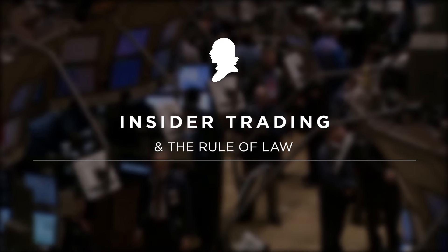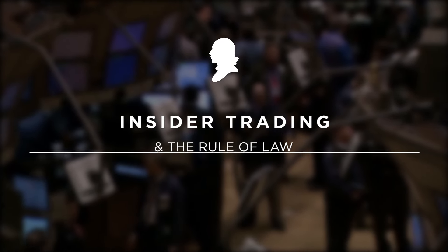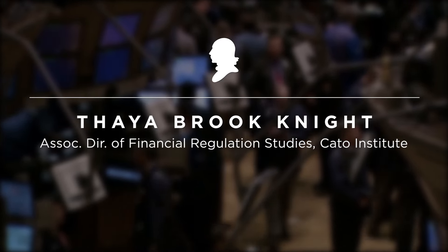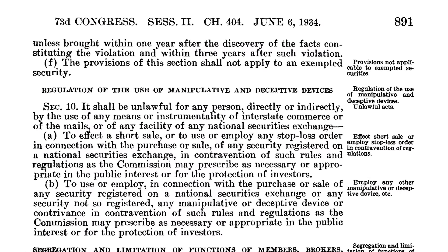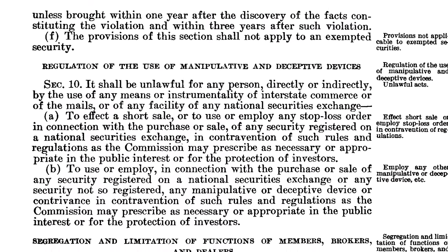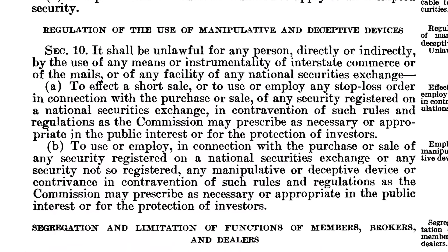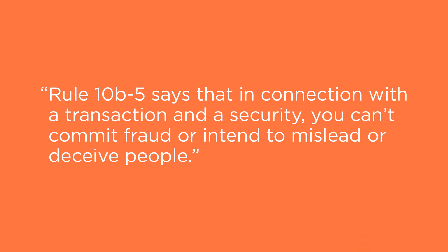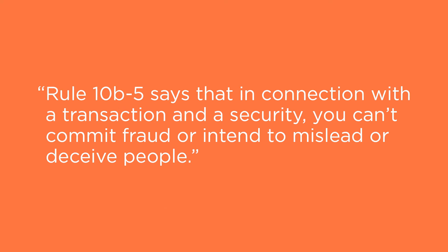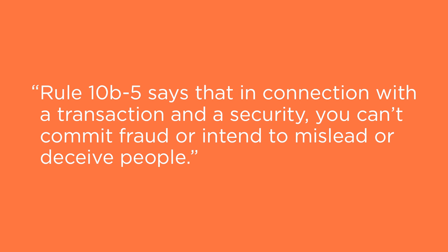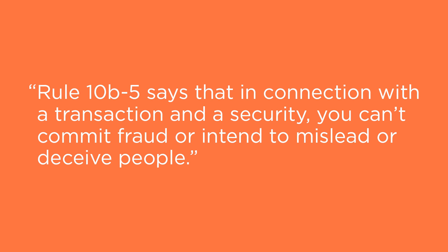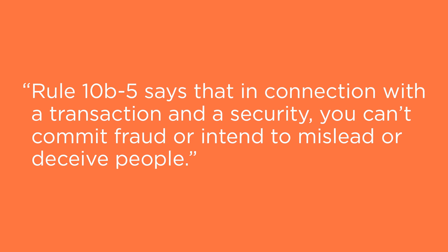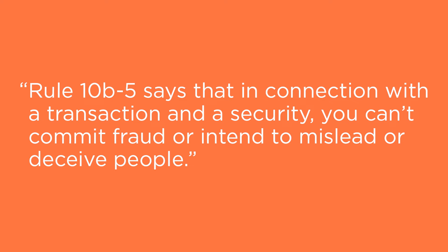In the Securities and Exchange Act of 1934, there is a section — Section 10b — that prohibits fraud in relation to transactions and securities. The SEC has implemented that in a rule called Rule 10b-5. Rule 10b-5 says that in connection with a transaction and security, you can't commit fraud or intent to mislead or deceive people.